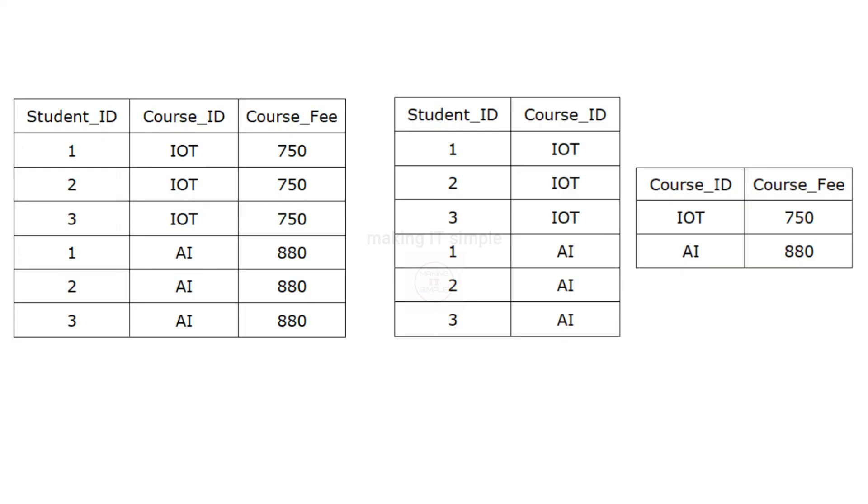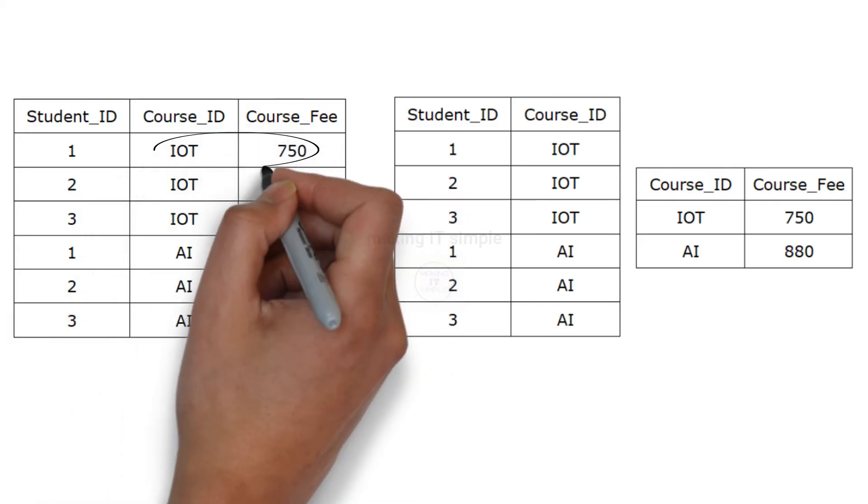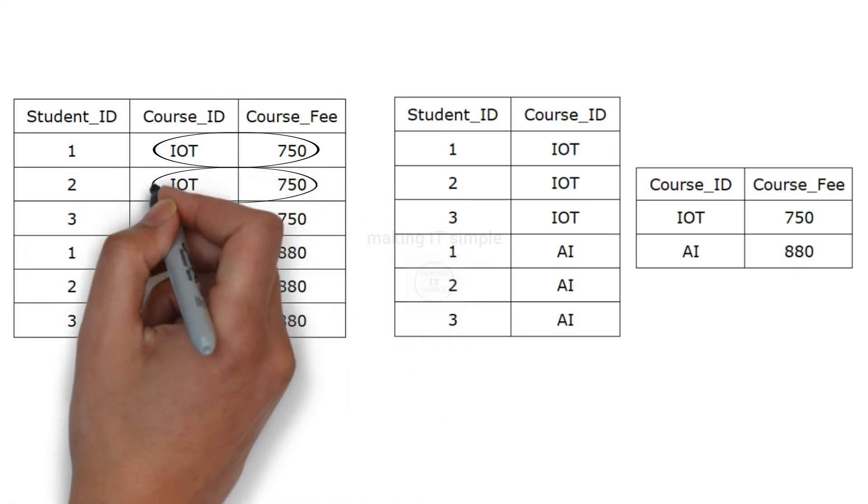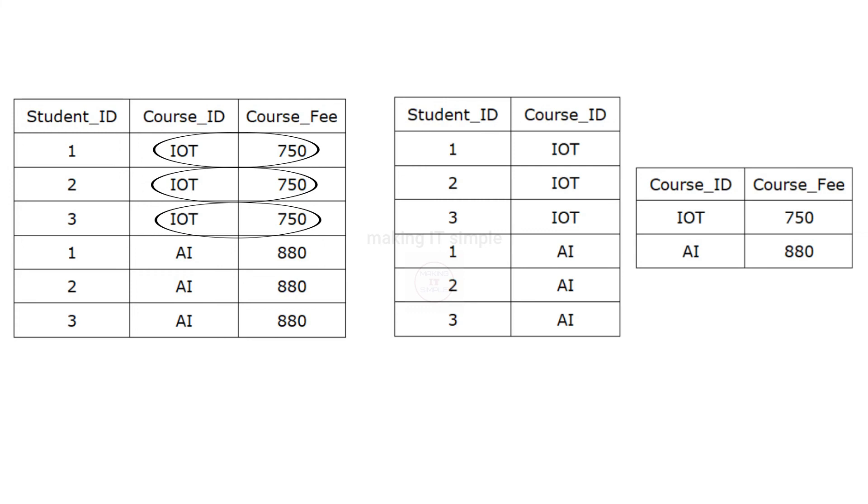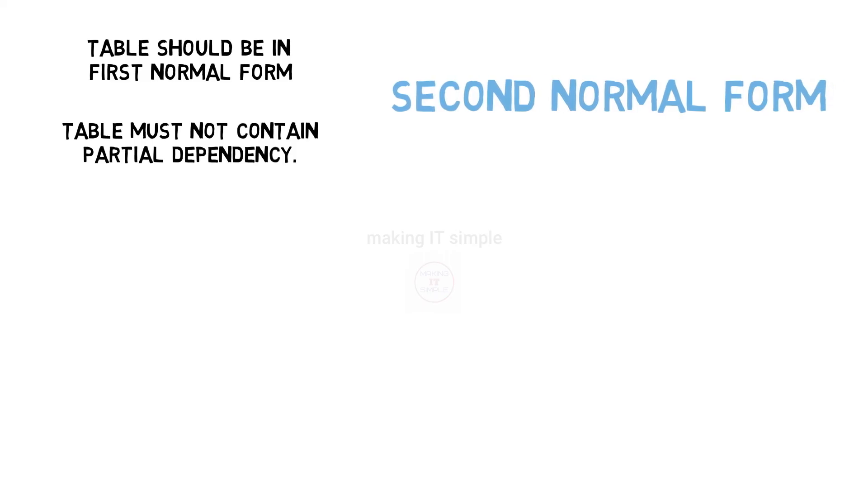So what does eliminating partial dependency do? So this tries to reduce the redundant data from getting stored in the memory. Imagine there are thousands of students and records of those students are stored. Course fee is same for a particular course id. But it will get stored thousands of times due to partial dependency. So this elimination of redundancy is the aim of second normal form.